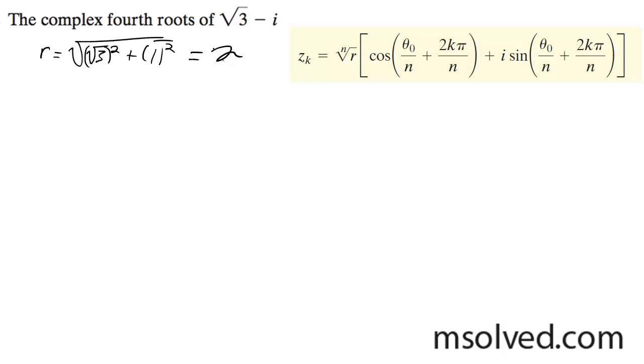So this angle here, root 3 minus i, this is 330 degrees for theta. And theta divided by 4 is going to be 82.5 initially, and then this is going to be 90 degree increments.